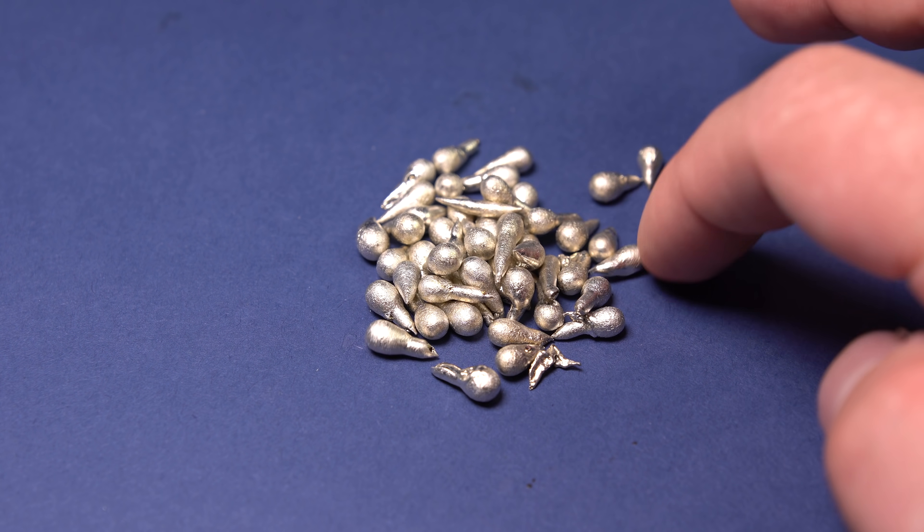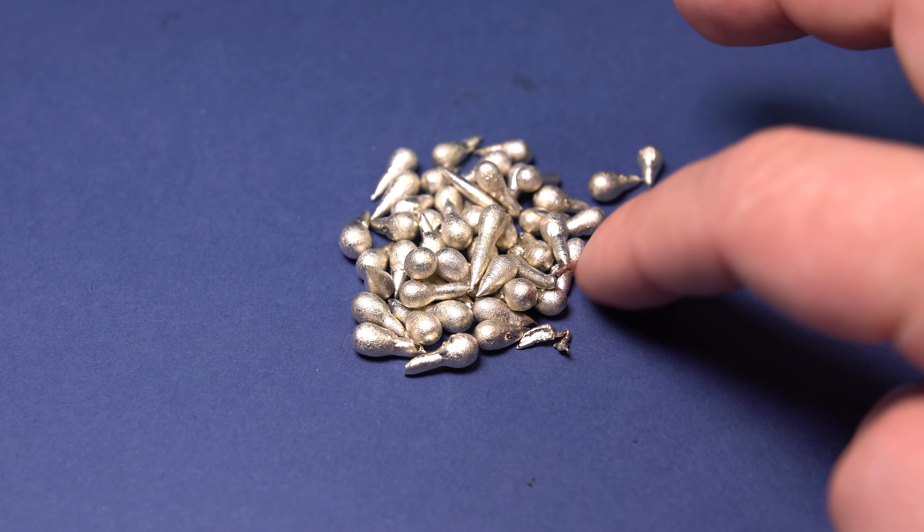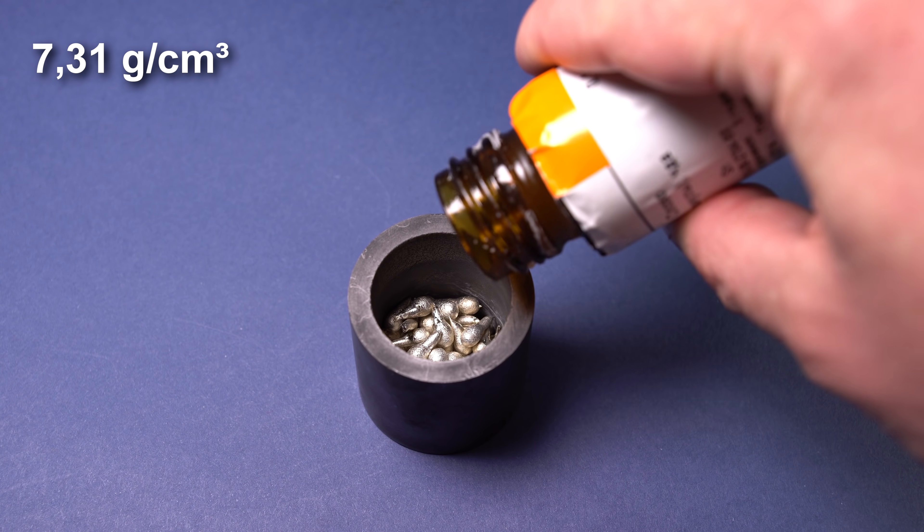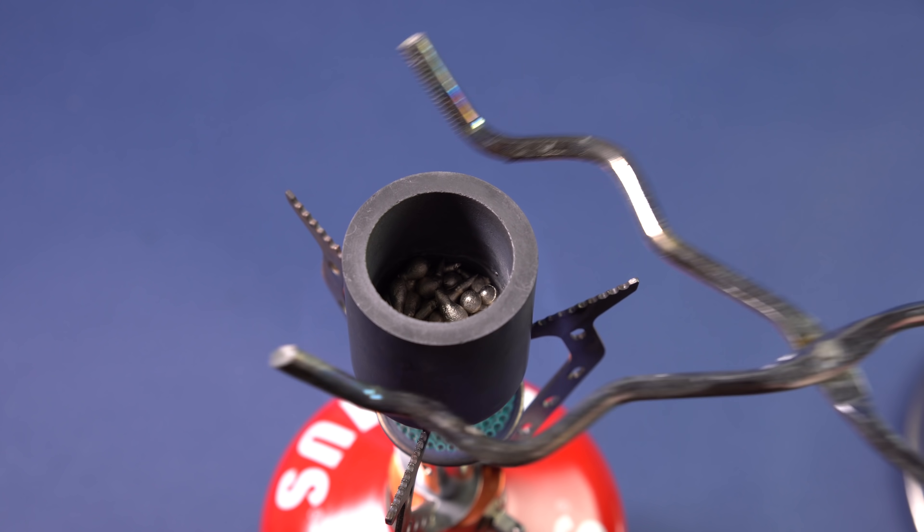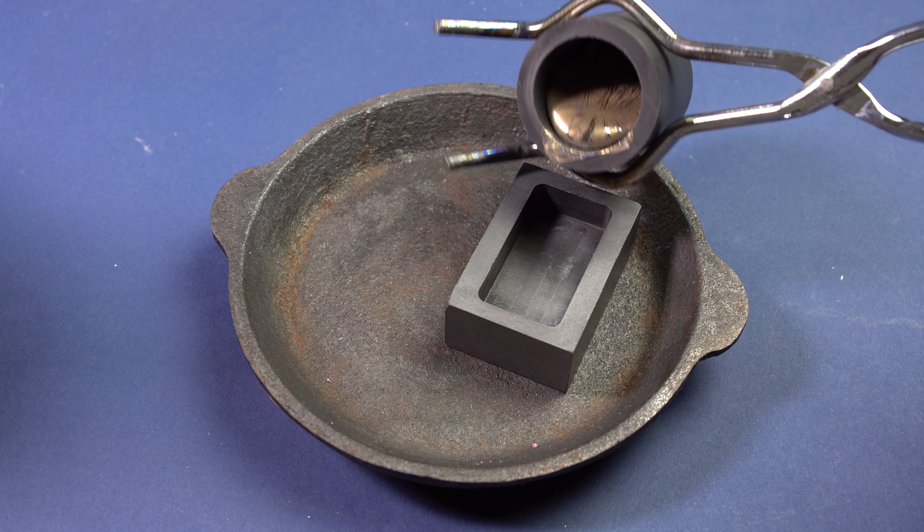In its pure form, tin is a shiny soft metal with a yellowish tinge. Due to the tin oxide covering it, the density of this metal is slightly less than that of lead, the melting point being 232 degrees Celsius.